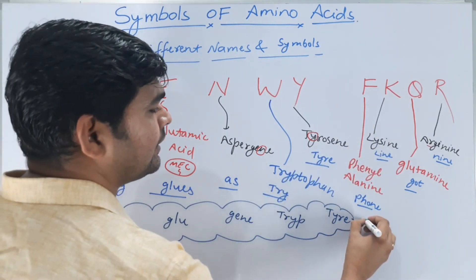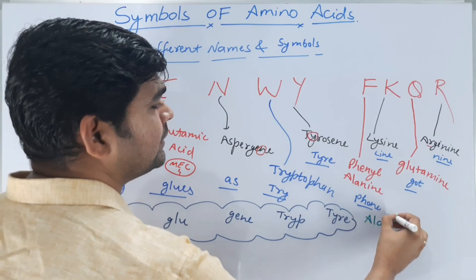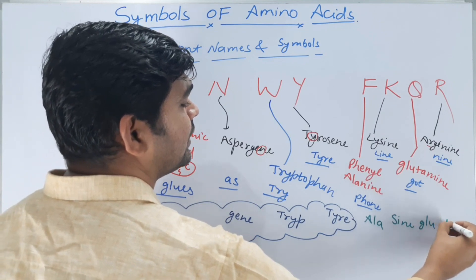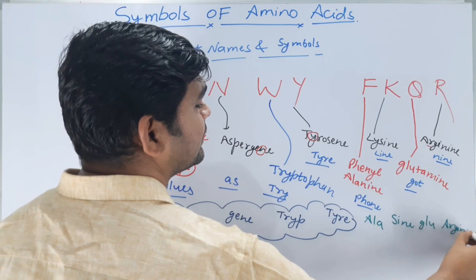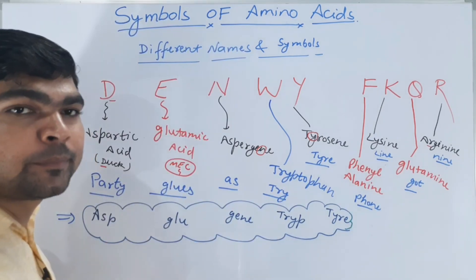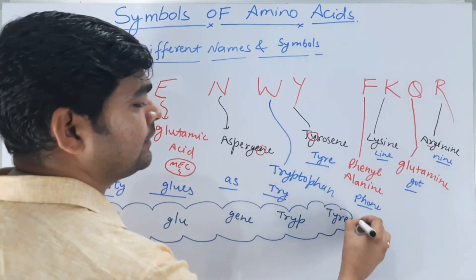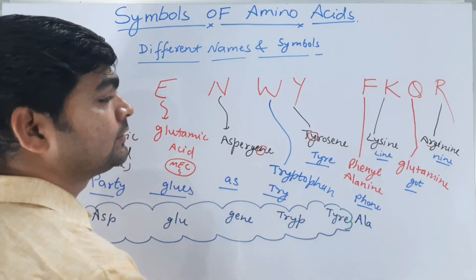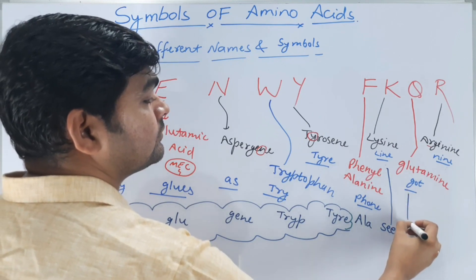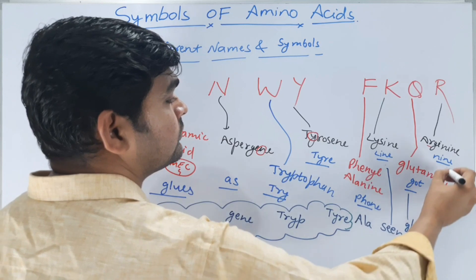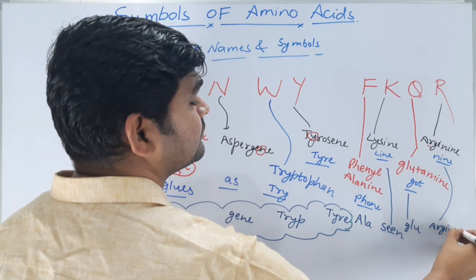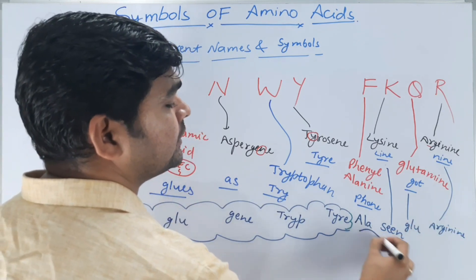And for the Fakir part, the second trick is: 'Ella — scene — glue — arginine.' So: Ella, scene, glue, arginine. If you find it easier, remember: phenylalanine — lysine — glutamine — arginine, as 'Ella scene glue arginine.'